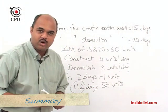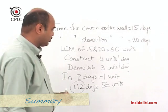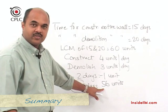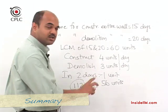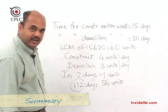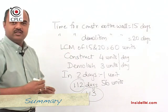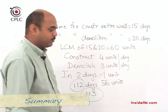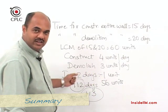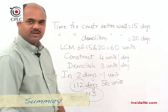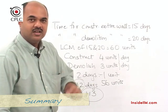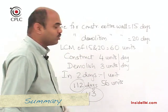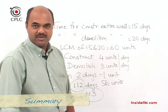At the end of 112 days, 56 units are complete. On day 112, 3 units were demolished, leaving 4 units remaining. On day 113, the builder constructs those final 4 units, completing the wall. So the entire wall is constructed in 113 days. Beware of the common mistake of simply multiplying — it can cost significant marks.